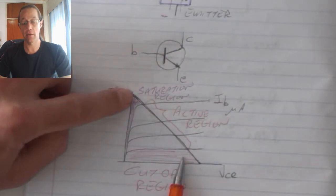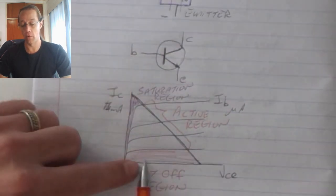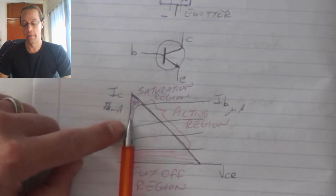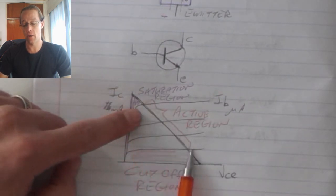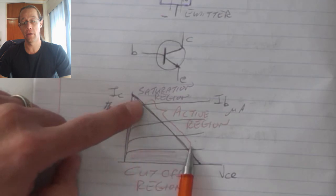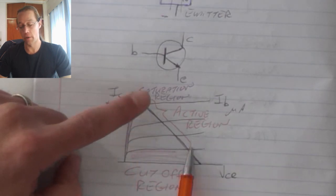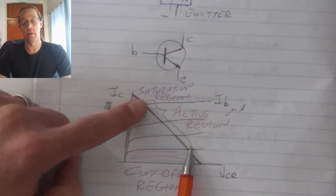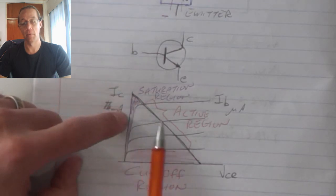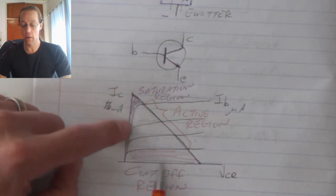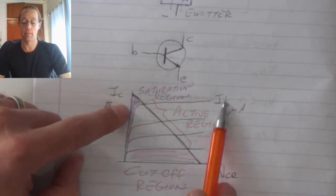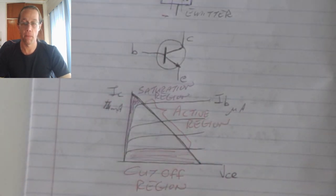In the cutoff and the saturation is when it acts as a switch—in other words, completely off or completely on. And then the center section is the active region, and that is where it operates on a varying voltage and current capabilities, depending on the size of the base current that is flowing.